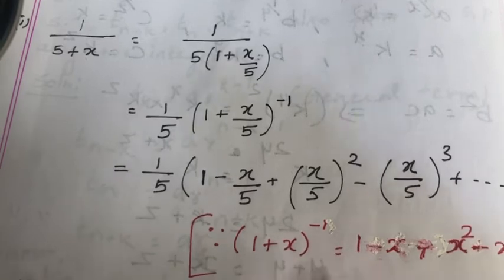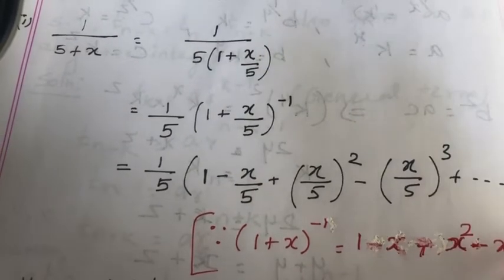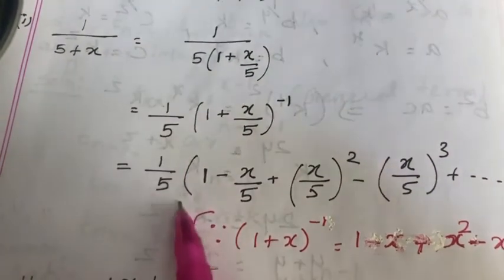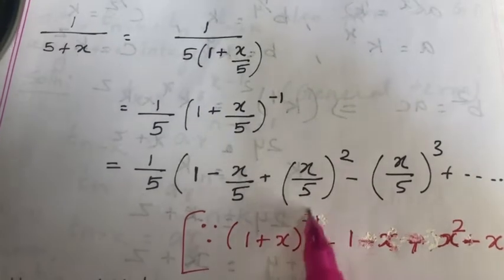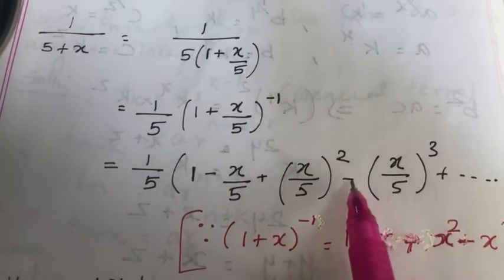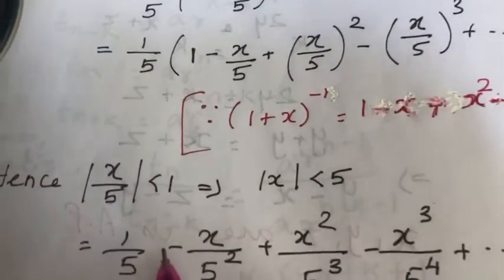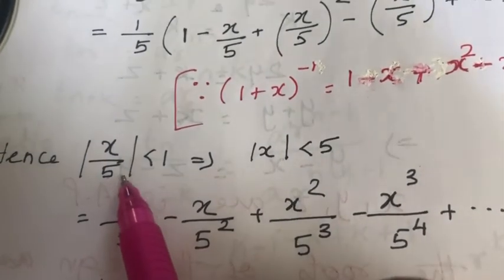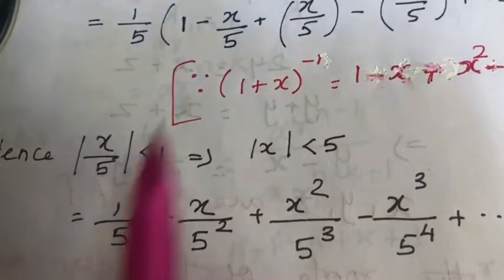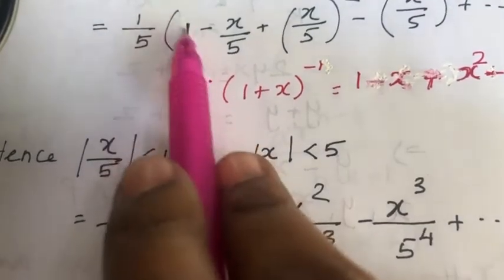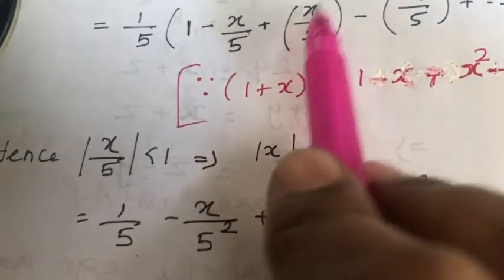That is equal to 1 − x + x² − x³ and so on, with the sign changing alternately. So (1/5) into (1 − x/5 + (x/5)² − (x/5)³ + ...), where |x/5| < 1, so |x| < 5. Multiplying inside: 1/5 − x/5² + x²/5³ − x³/5⁴ and so on.